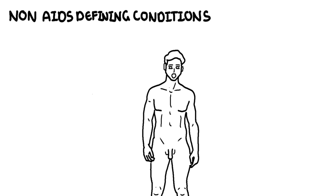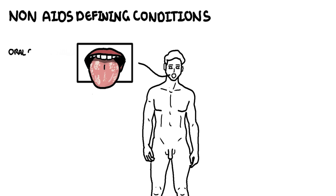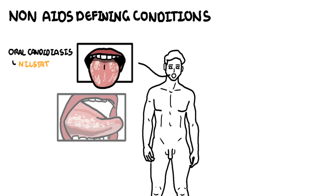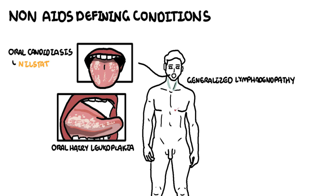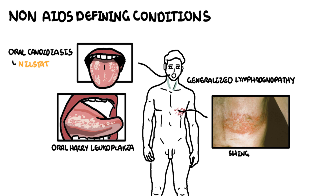Non-AIDS defining conditions in HIV persons include oral candidiasis, which can be treated with NILSTAT, a simple antifungal. They can also develop oral hairy leukoplakia caused by the Epstein-Barr virus. They can have generalized lymphadenopathy. Shingles, caused by reactivation of the varicella zoster virus, can be treated with acyclovir or valacyclovir.